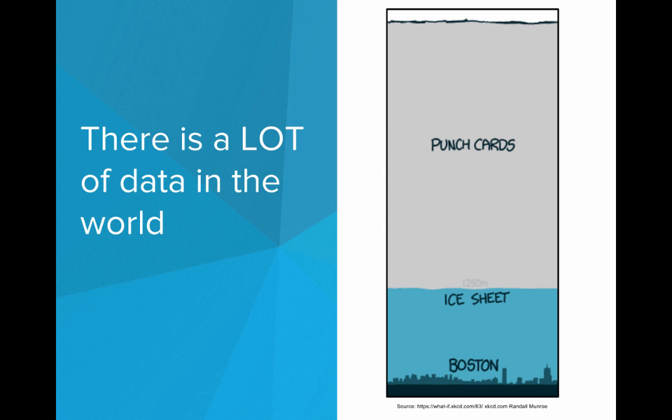In fact, if Google alone were to put all of their data on punch cards, which are tiny little pieces of paper that can only hold about 80 characters, the amount of punch cards would be able to cover New England to the point that Boston would be buried significantly deeper than it was during the last Ice Age.